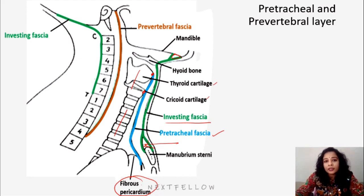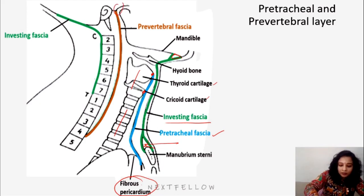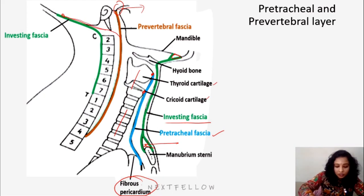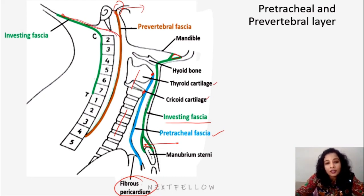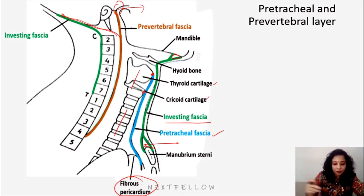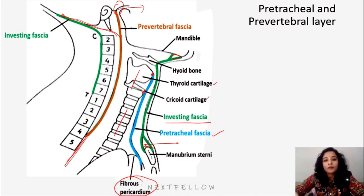About the pre-vertebral layer: it attaches superiorly to the base of the skull and also to the external occipital protuberance. It is in front of the cervical vertebra, where it continues to form the anterior longitudinal ligament which is present in front of the vertebral column.